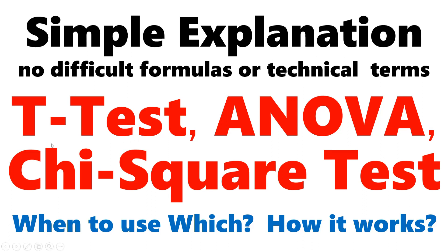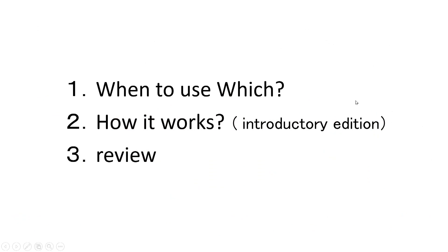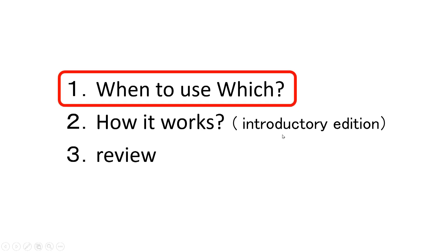Here is an explanation video about t-test, analysis of variance ANOVA, and chi-square test. We will explain them in a simple way without using difficult formulas or technical terms. Here is the table of contents. First, we will explain when and how to use each test, and then we will explain the approach and probability calculation of each test. Let's start right away.